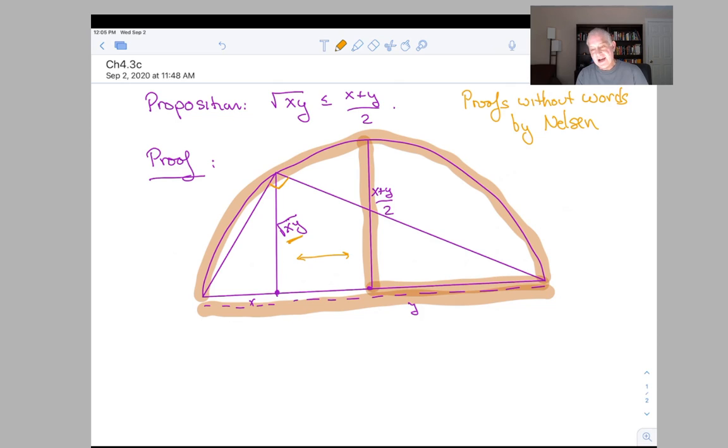So that's the proof without words. Now, the thing about proofs without words is that there's a lot of unspoken words. And of course, the big unspoken word for me in this is, why is this really true? Why is the square root of xy? Why is this altitude really the square root of xy?